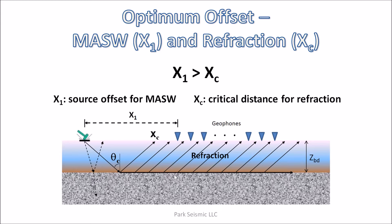In MASW, there is an optimum source offset condition which requires the distance between the seismic source and the nearest receiver to be greater than a certain fraction of receiver array length. On the other hand, there is the critical distance condition in refraction survey that requires all receivers to be placed beyond this critical distance. When we consider these two conditions simultaneously, we find that they are favorable to each other — meaning if you collect MASW field records according to the optimum source offset condition, the records are good candidates for evaluating bedrock velocities.